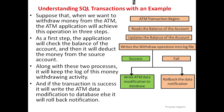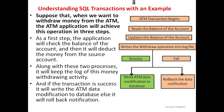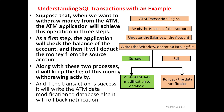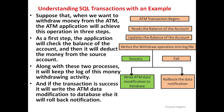Now we will understand SQL transactions with an example. When we want to withdraw money from an ATM, the ATM application achieves this in three steps. First, it checks the balance of the account, then deducts the money from the source account by reading and updating the balance. Along with these two processes, it keeps a lock on the withdrawal activity. If the transaction is successful, it writes the ATM data modification to the database; otherwise, it rolls back the modifications.